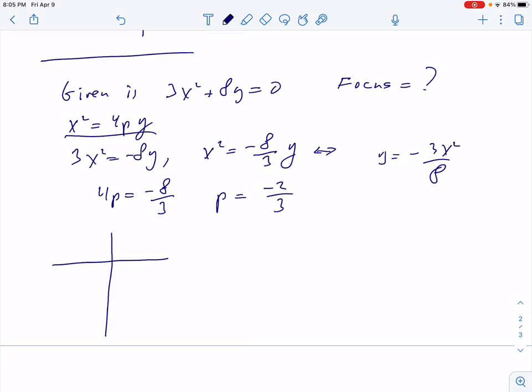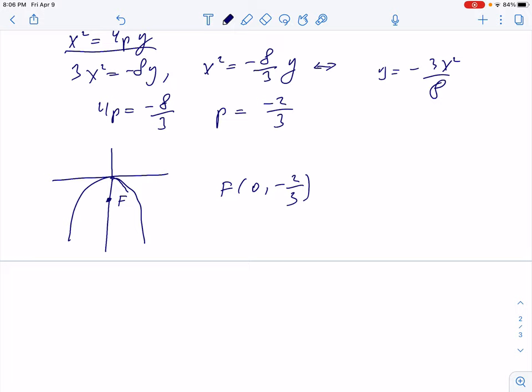Here I'm making a quick picture. Vertex is again at (0, 0). Our parabola more or less looks like this. And the focus has coordinates (0, negative 2 thirds). That's a very standard problem to solve.